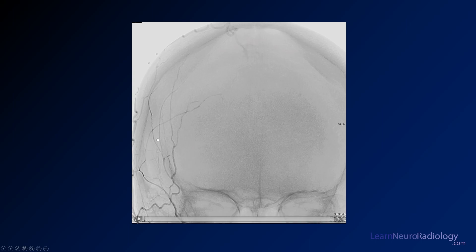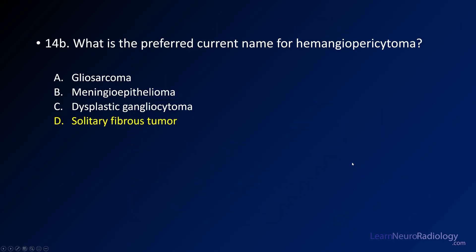A lot of times they'll go on to embolize these before moving forward with surgical resection. The preferred name for hemangiopericytoma is solitary fibrous tumor, so just be aware that the nomenclature has changed and you might see slightly different terminology. Thanks for tuning into this case — hopefully you learned a little bit about extra-axial lesions and what to include in your differential if you see a pretty aggressive-looking extra-axial lesion.